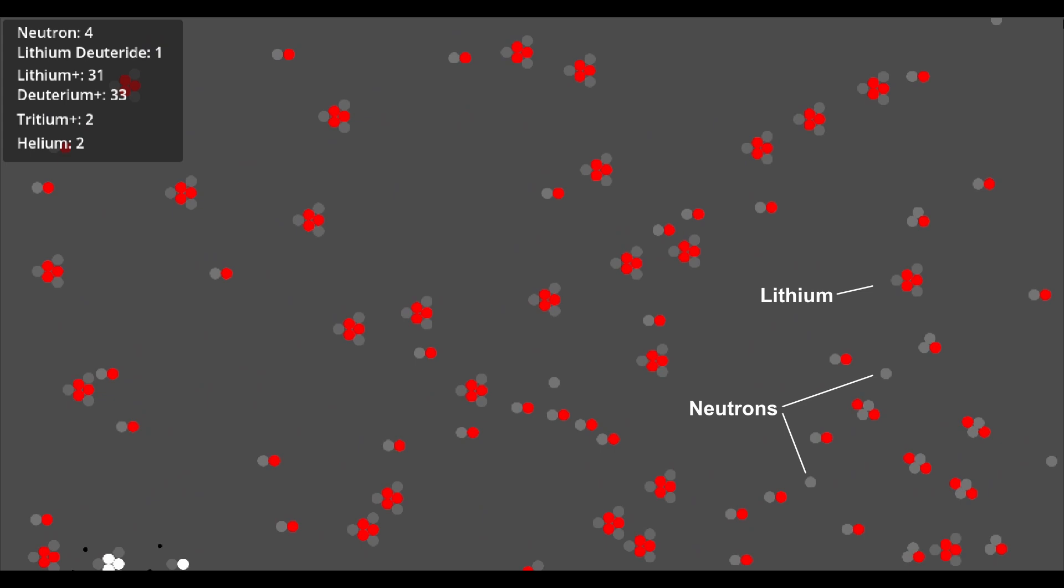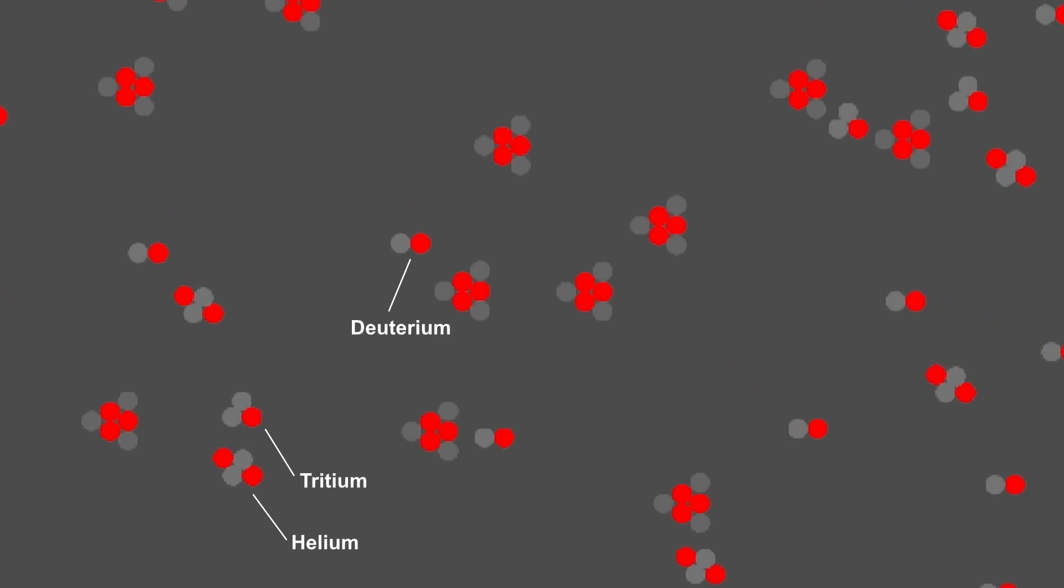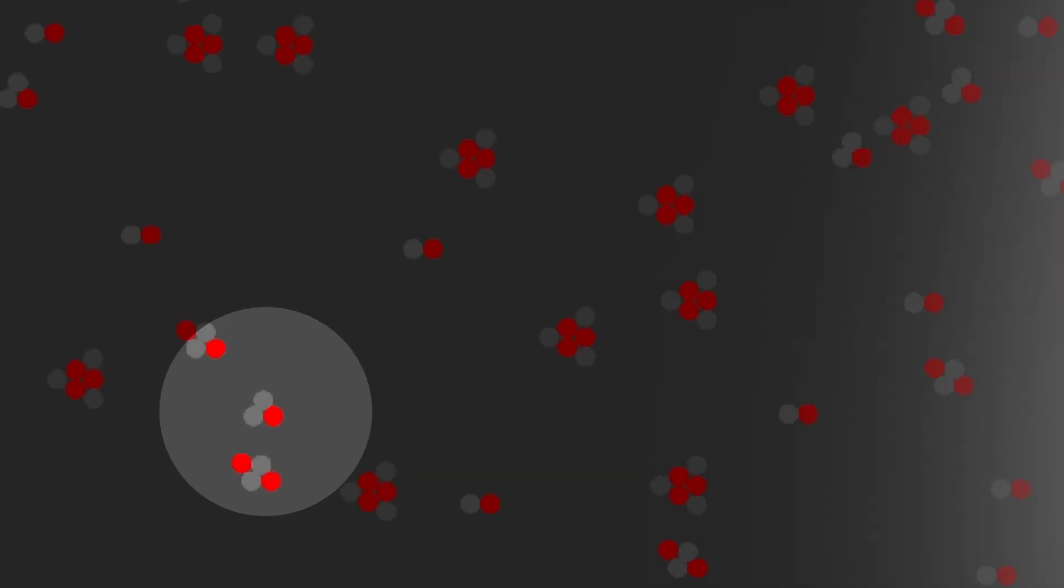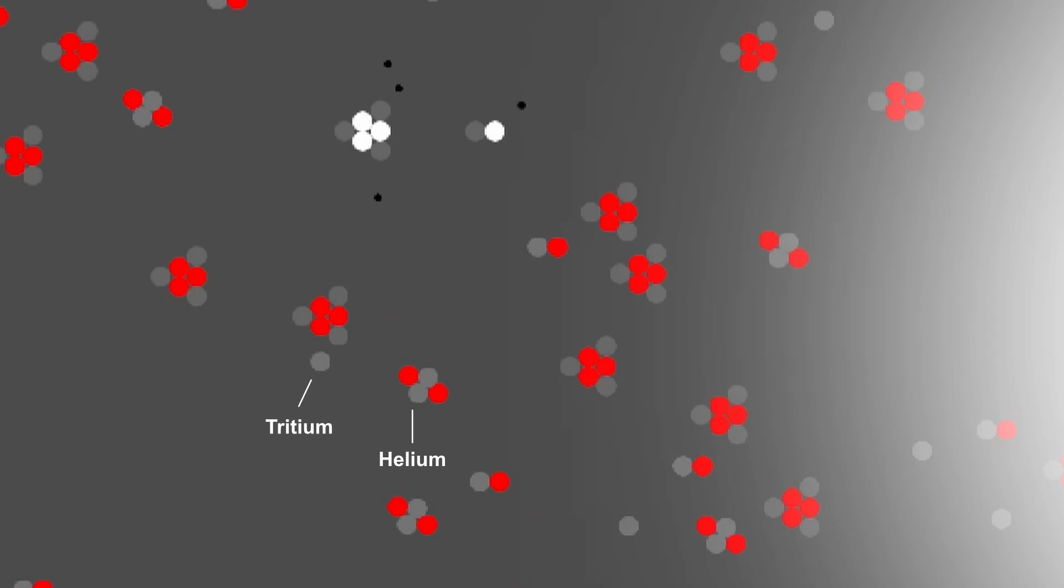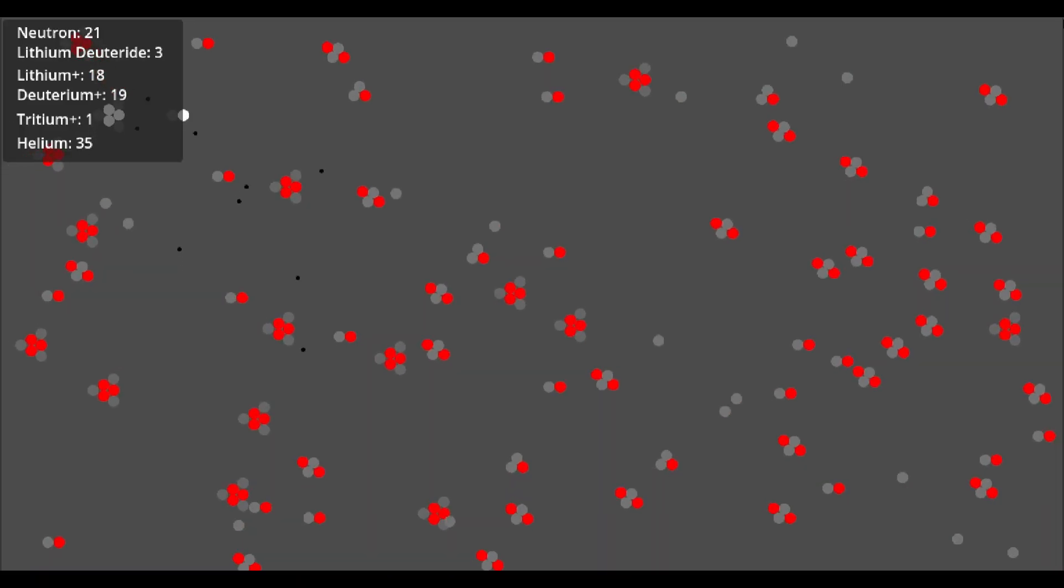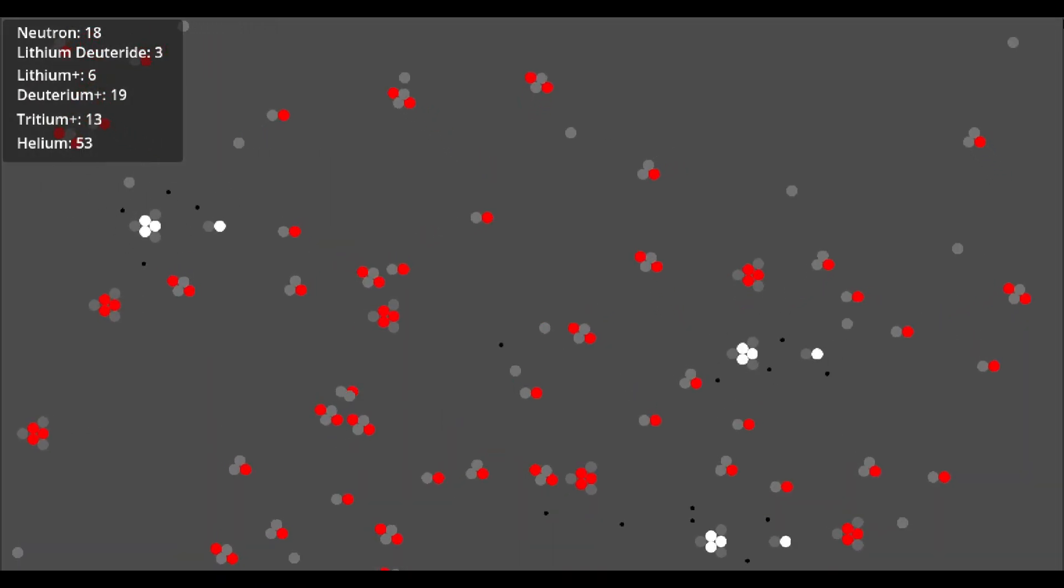The initial neutrons interact with the lithium to cause a breakup of the lithium into tritium, an isotope of hydrogen with two neutrons, and helium. The tritium produced will then fuse with the already available deuterium, and in that process release a large amount of energy in the form of high energy neutrons. These neutrons will then go on to break more lithium atoms into tritium and helium, with the tritium fusing with deuterium and continuing the chain reaction of producing energy.